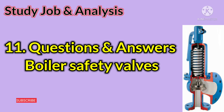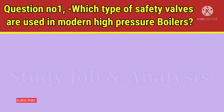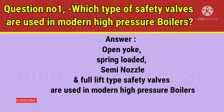Question number 1: Which type of safety valves are used in modern high pressure boilers? Answer: Open yoke, spring loaded, semi-nozzle and full lift type safety valves are used in modern high pressure boilers.